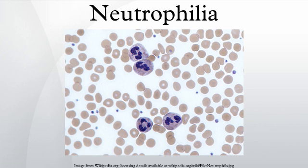Neutrophils are also increased in any acute inflammation, so they will be raised after a heart attack, other infarcts, or burns. Some drugs, such as prednisone, have the same effect as cortisol and adrenaline, causing marginated neutrophils to enter the bloodstream. Nervousness will very slightly raise the neutrophil count because of this effect.